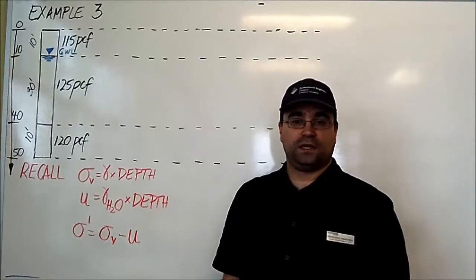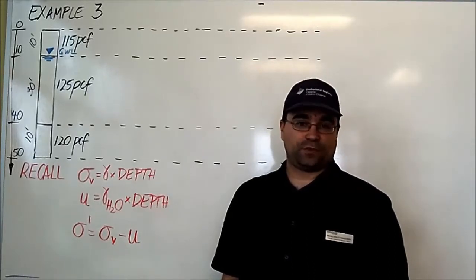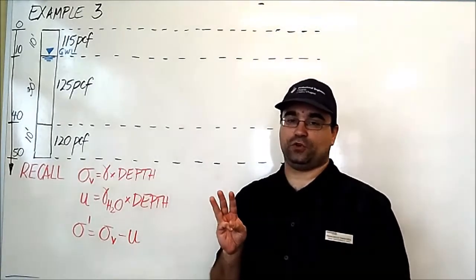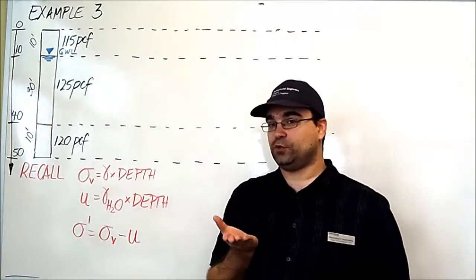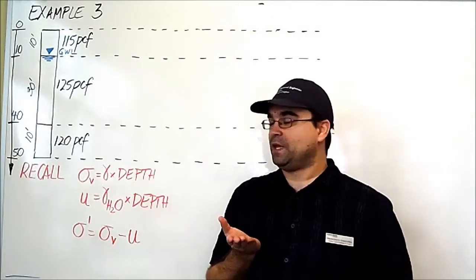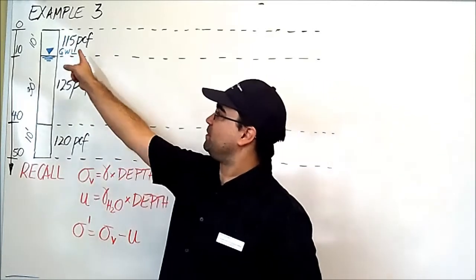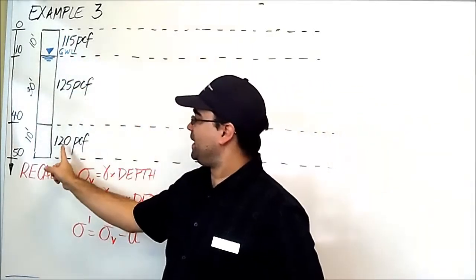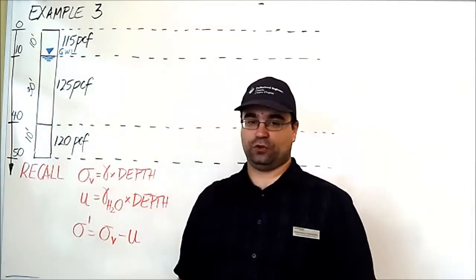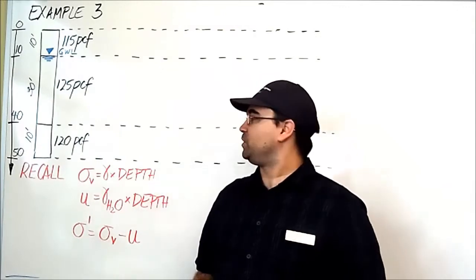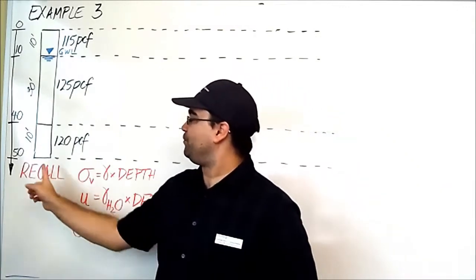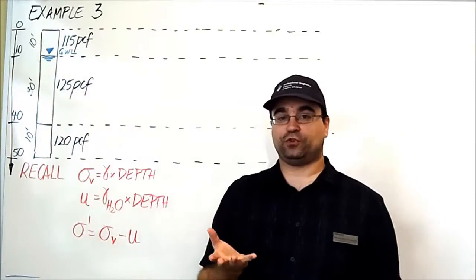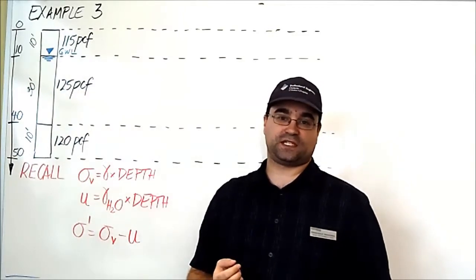Hello students. This is example number three. We're going to cover a three-layered soil, improving on examples one and two. We are going to include the effects of water and also have an extra layer of soil. To get a better view of what example number three looks like, please refer to your course notes, lecture six.